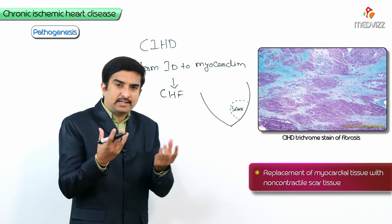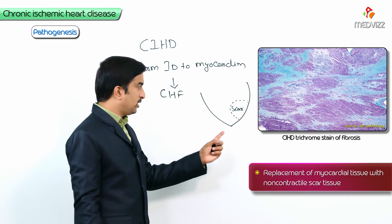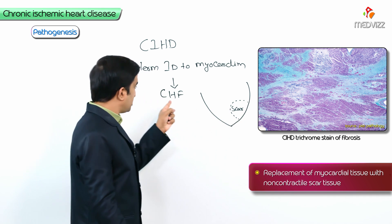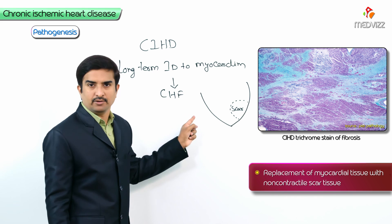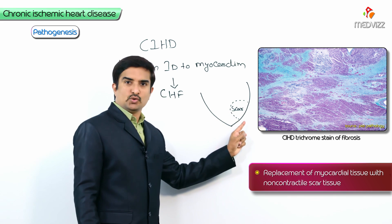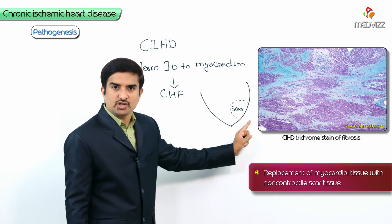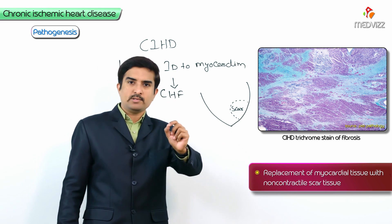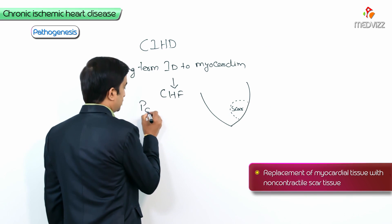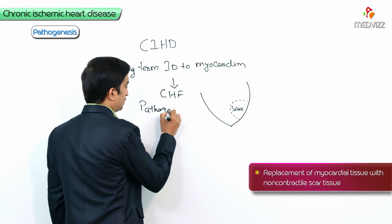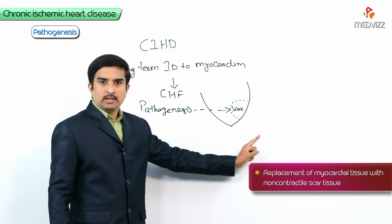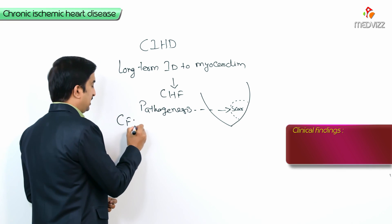Due to this, the left ventricle's contractile capacity decreases because the infarcted tissue is replaced by scar. This is what is responsible for the development of congestive heart failure. The main pathogenesis is that the damaged or ischemic tissue is replaced by non-contractile scar tissue — so pathogenesis is essentially the formation of scar.